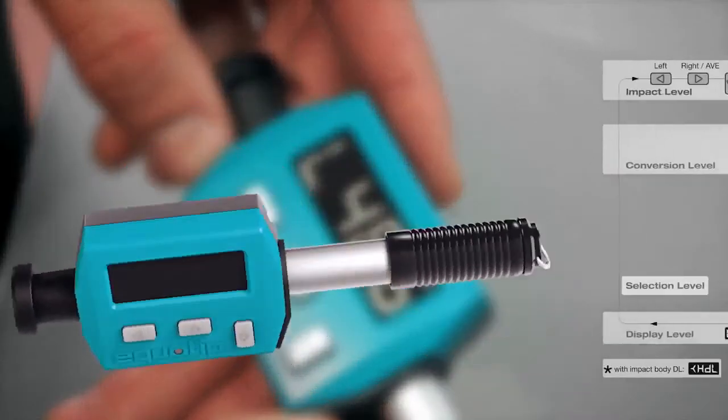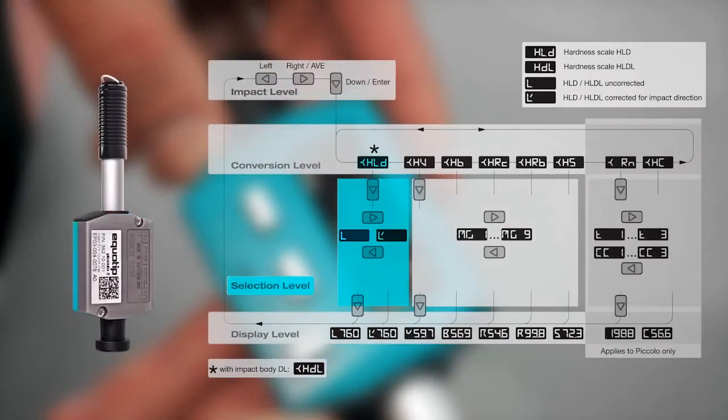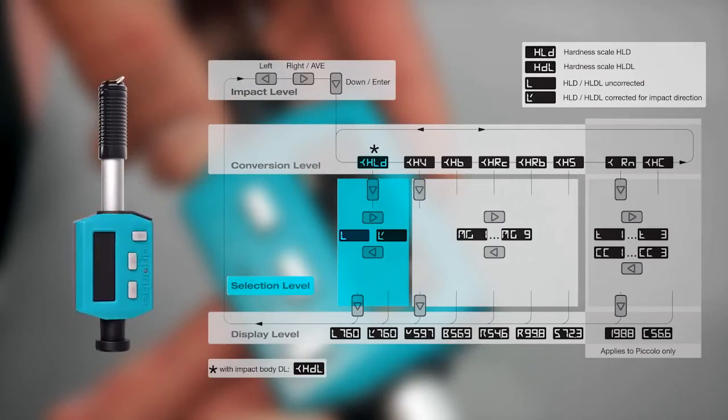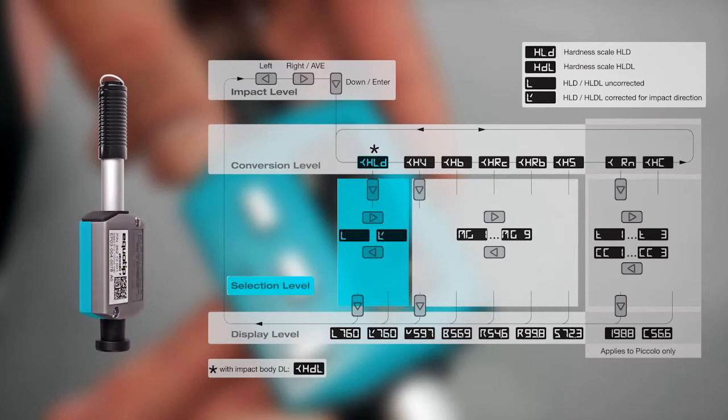If you choose Lieb, you can select L, which allows you to use the original uncorrected Lieb value. Otherwise, the value is always corrected for impact direction. Most measurements with the Ecotip Piccolo are performed in the average mode. This means that a series of impacts is performed and the instrument displays the average value of these impacts when completed.